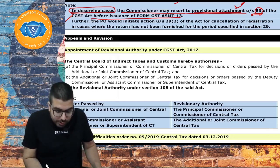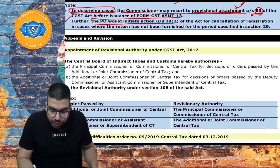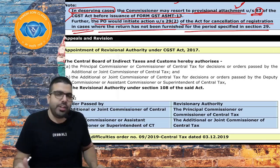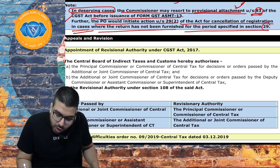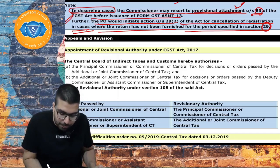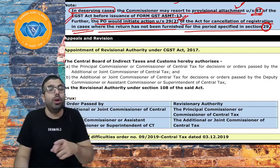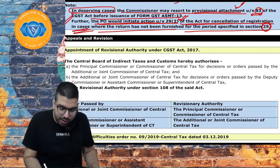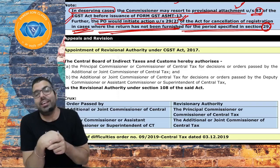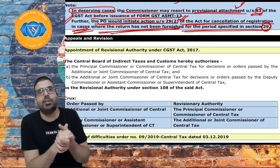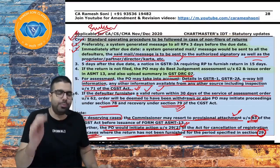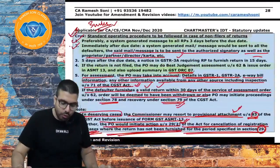Further, if you have not filed your return for six months, the proper officer can initiate action under section 29 for cancellation of registration. Section 29 provides that if you don't furnish your return for a continuous period of six months, your registration can be cancelled. This is very important for the exam — they can ask for three or four marks.